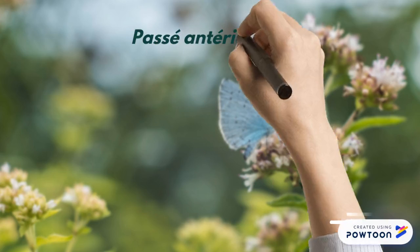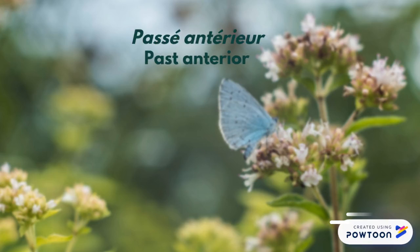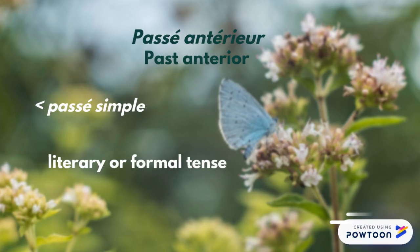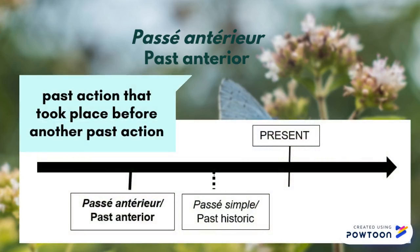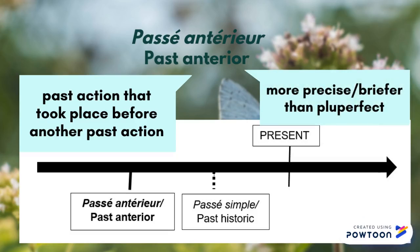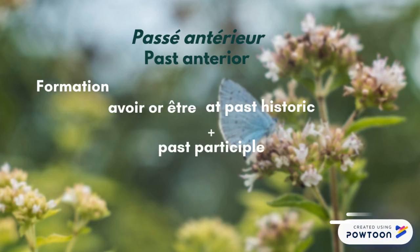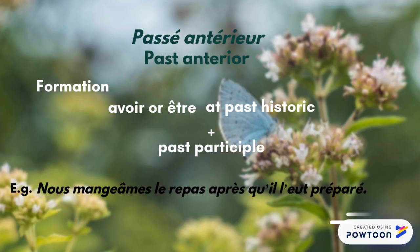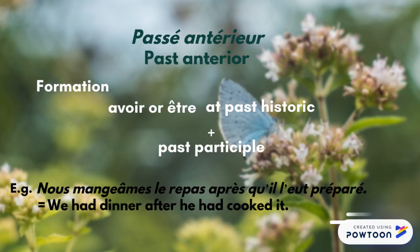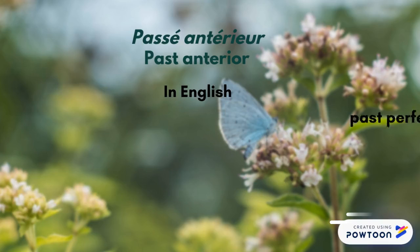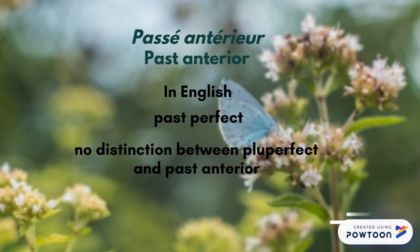Another compound tense is the passé antérieur, or past anterior. It derives from the passé simple, and like the passé simple, it is a literary or formal tense. It indicates a past action that took place before another past action, but this action is more precise or briefer than with the pluperfect. To form the past anterior, you conjugate the auxiliary avoir or être at the past historic and add the past participle of the verb. For example, nous mangeâmes le repas après qu'il l'eût préparé — we had dinner after he had cooked it. In English, you translate the passé antérieur with the past perfect; note that English does not distinguish between the pluperfect and the past anterior.